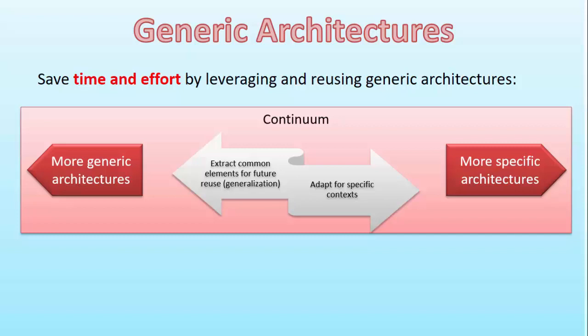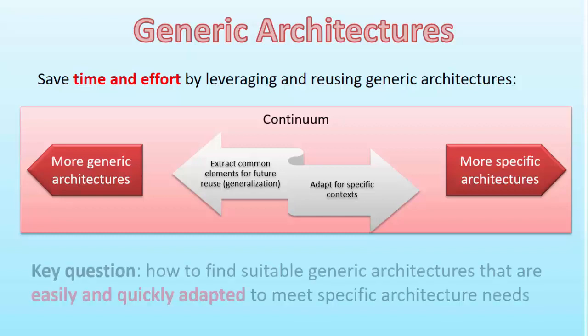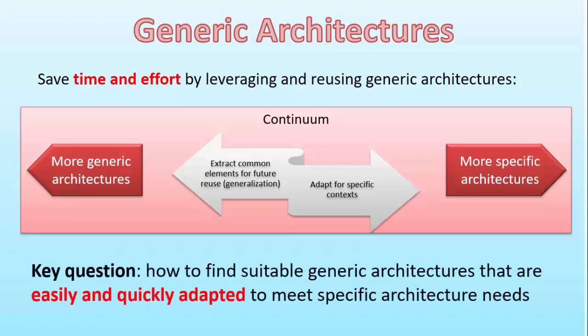This notion of a continuum is very important. You'll find it mentioned in things like the Open Group Architecture Framework, which refers to an enterprise and architecture and solution continuum. The key question is: how do you find suitable generic architectures — ones that can easily and quickly be adapted to meet your specific needs? Because if there's a generic architecture you can't easily and quickly adapt, you'll be using almost as much time as you would creating your own specific architecture from scratch.